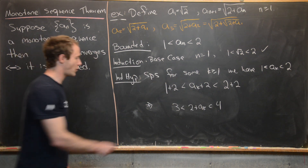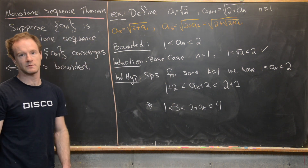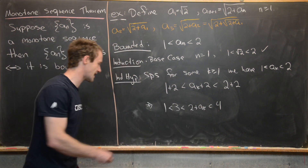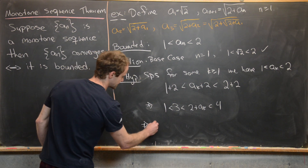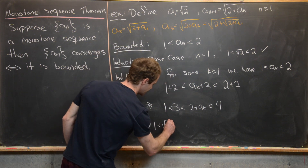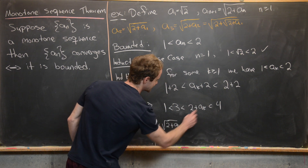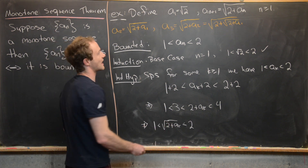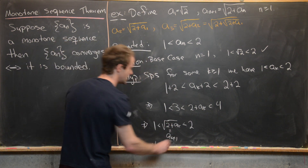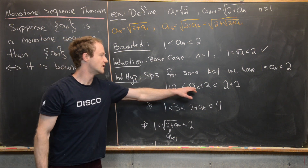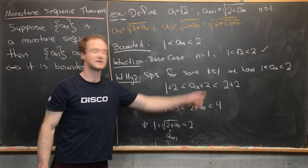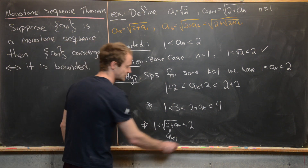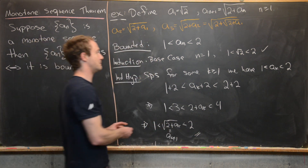Since 3 is bigger than 1, we can take the square root throughout. That gives us the square root of 1 — which is 1 — less than the square root of 2 plus a sub k, less than the square root of 4 — which is 2. But that interior expression is exactly a sub k+1. So assuming the statement was true for a sub k, we've shown it's true for a sub k+1, completing the induction proof that the sequence is bounded.